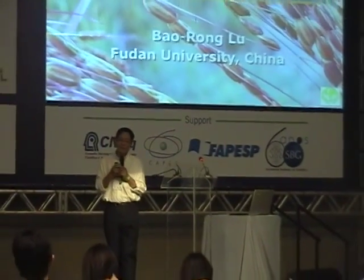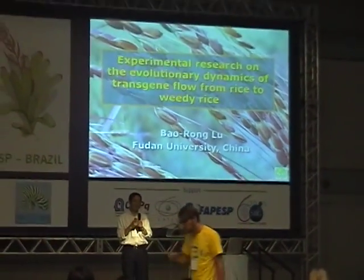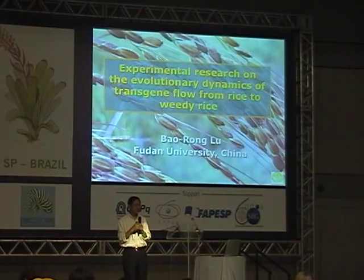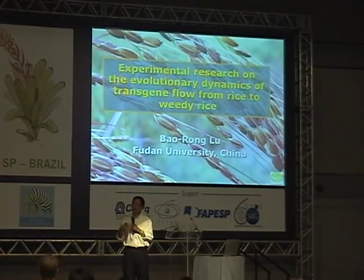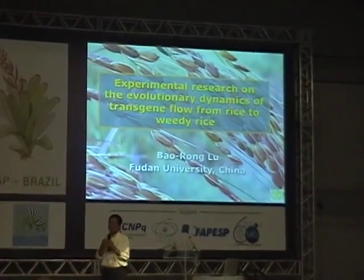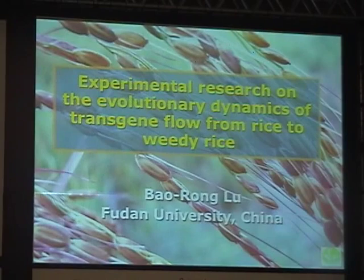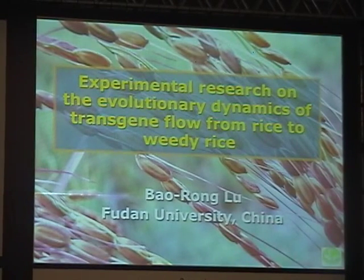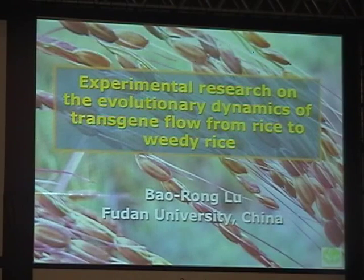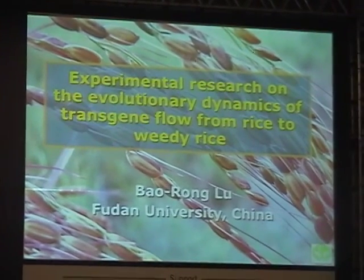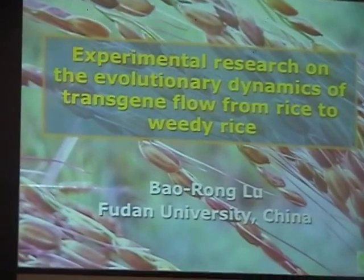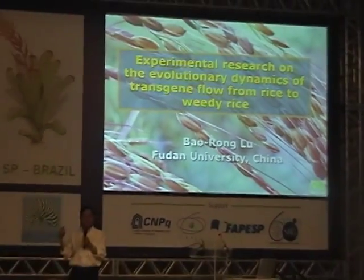We heard about the policy and science aspect of the gene flow issue. I'd like to use a case study to show how important the gene flow issue can really affect our agriculture. I use agricultural weeds as an example. Do you know how important or what is the damage from agricultural weeds to agricultural production?